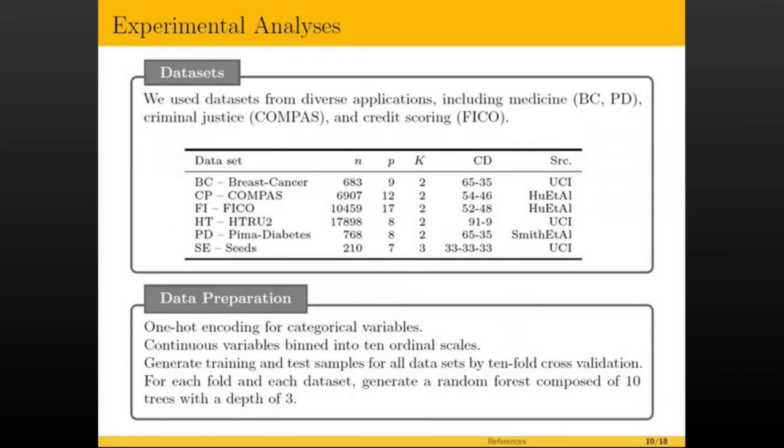We tested our process of Born Again Tree training on six main data sets that arise from different applications in medicine, criminal justice, credit scoring. For example, we have the COMPAS data set in the same version that is being used by Cynthia Rudin and coauthors. These data sets have up to 17,000 samples, up to 17 features. For data preparation, we use one-hot encoding for categorical variables, and we use binning for continuous variables into 10 ordinal scales. We generated training and test samples for each data set by 10-fold cross-validation, which means that we have 10 training and test sets. And for each fold, we generated a random forest, which consists of 10 trees with a depth of three. That means this random forest has roughly up to 80 leaves.